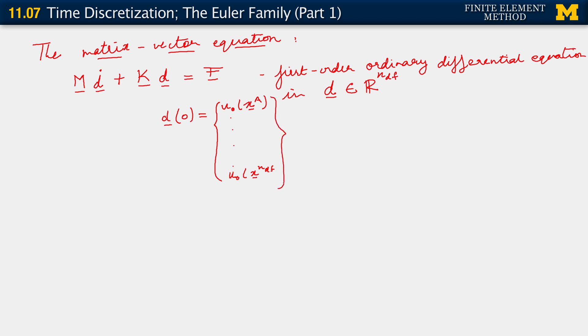Instead of continuing to number by nodes, we've forgotten all about nodes. Now, we're just looking at this linear system of equations where D belongs to an NDF Euclidean space. And this is what we have for the initial condition. It's convenient sometimes to refer to this vector as just D not. So this is the setting we have.